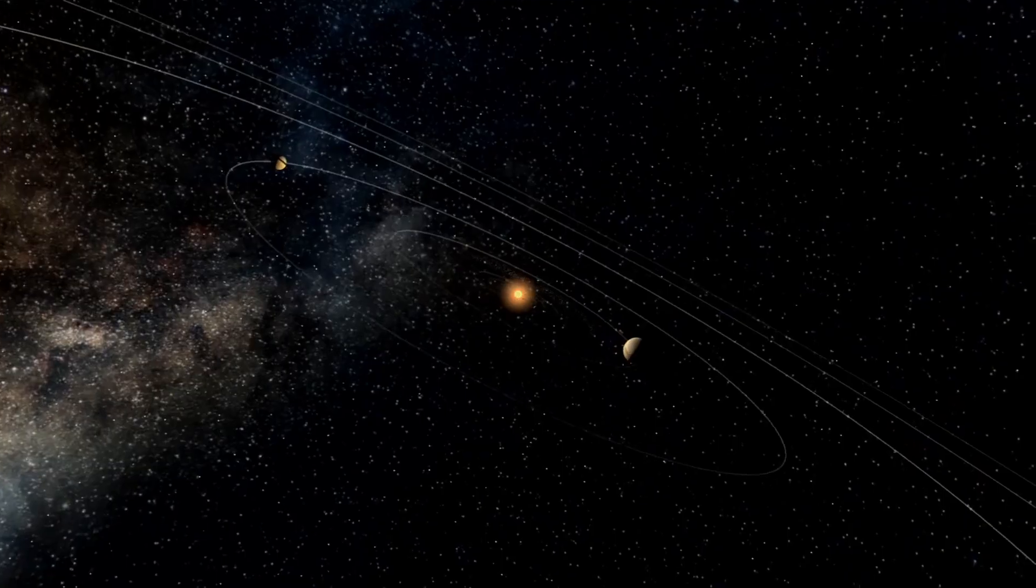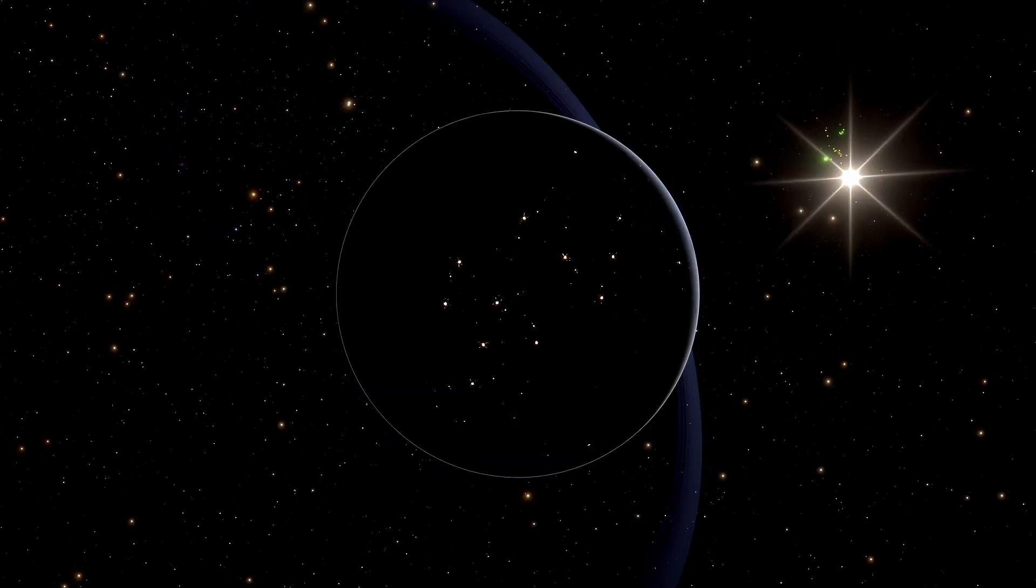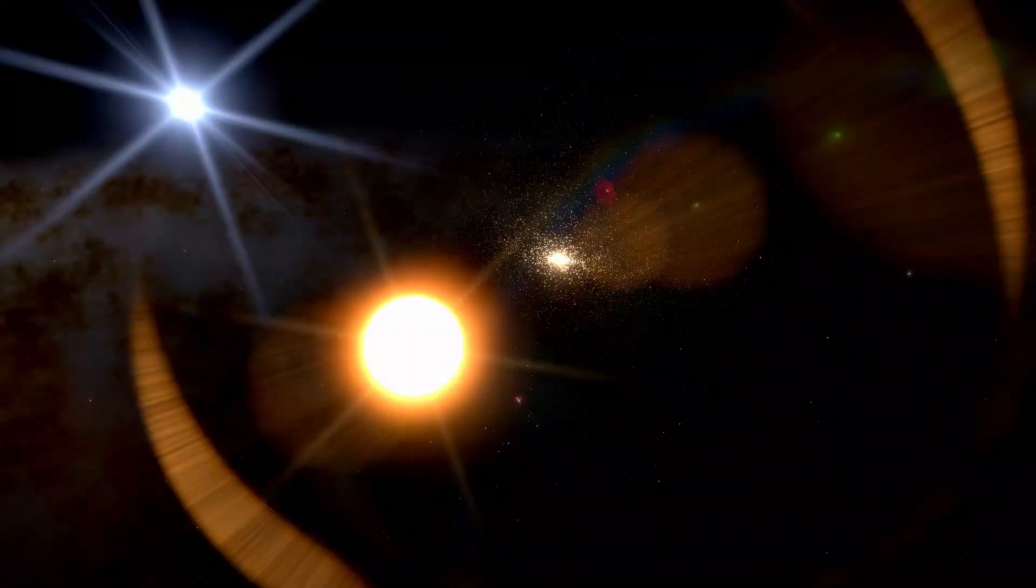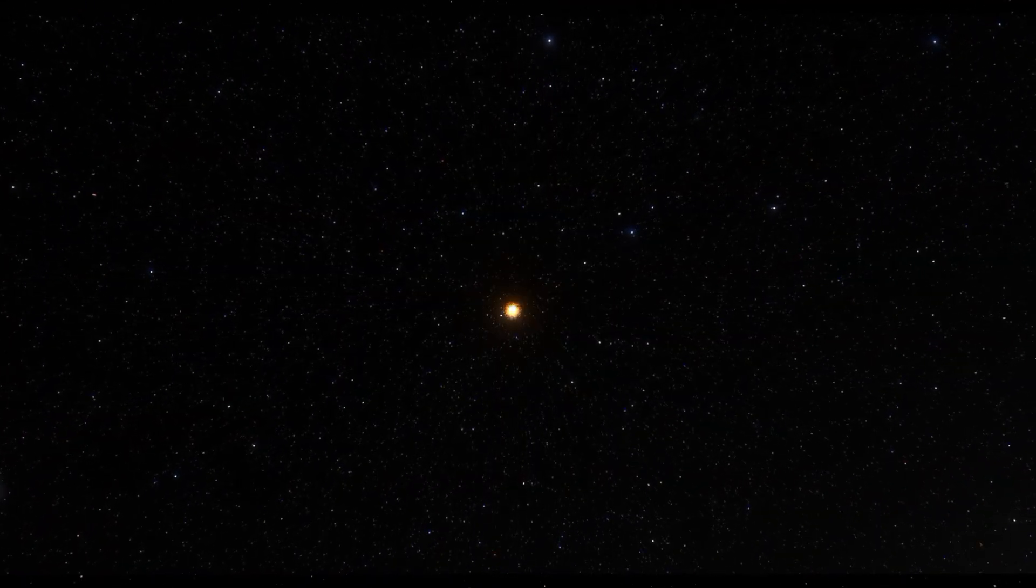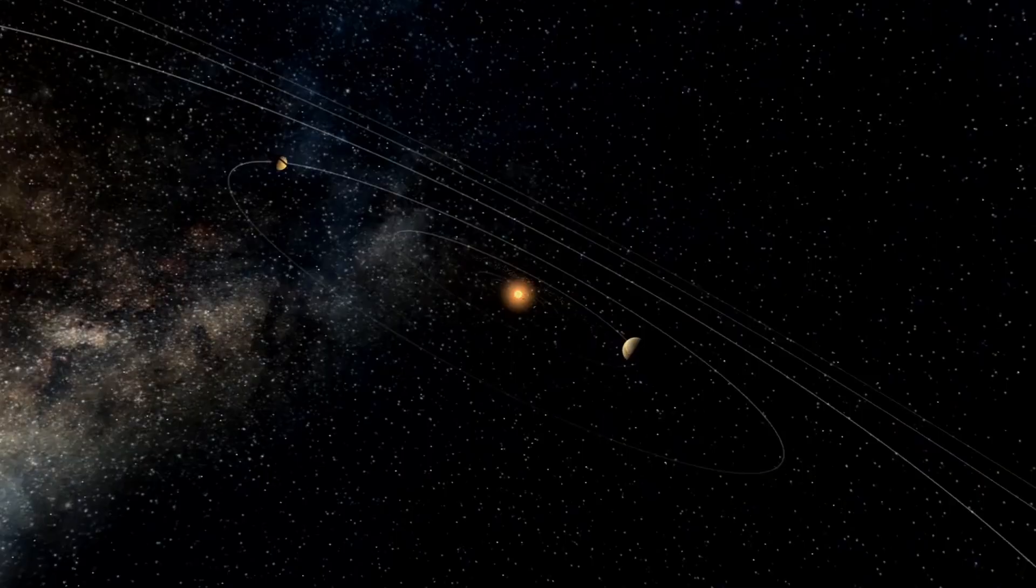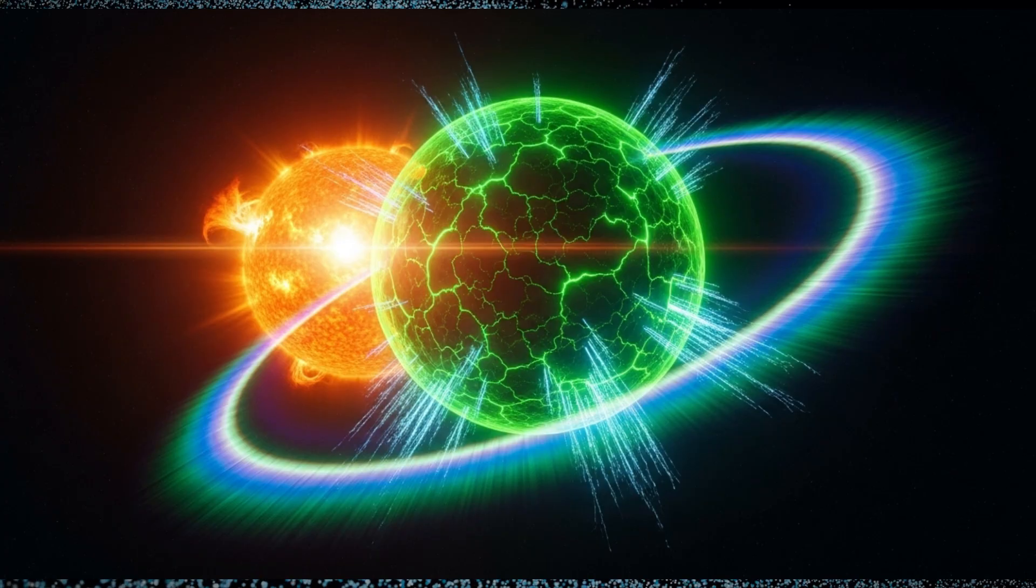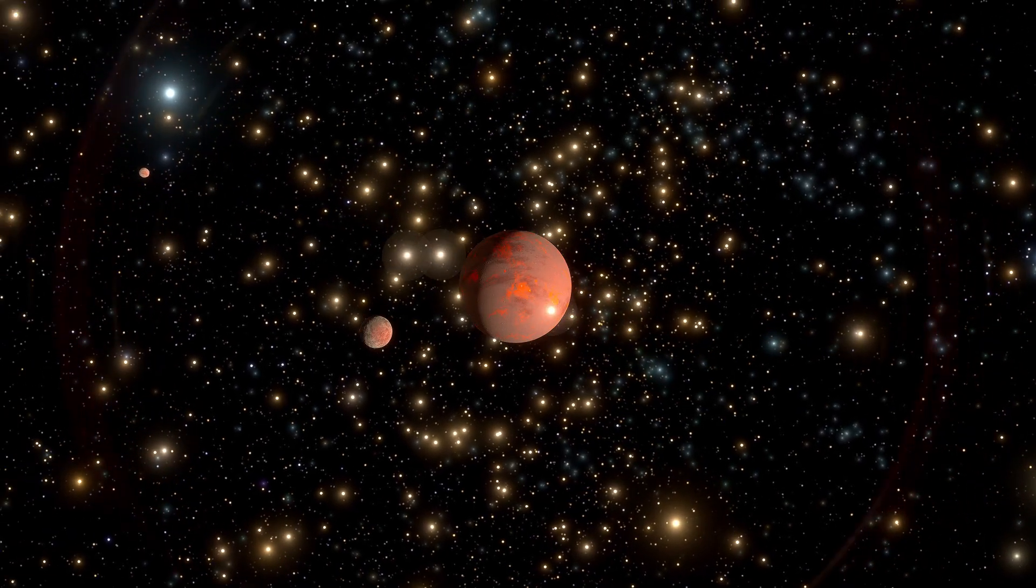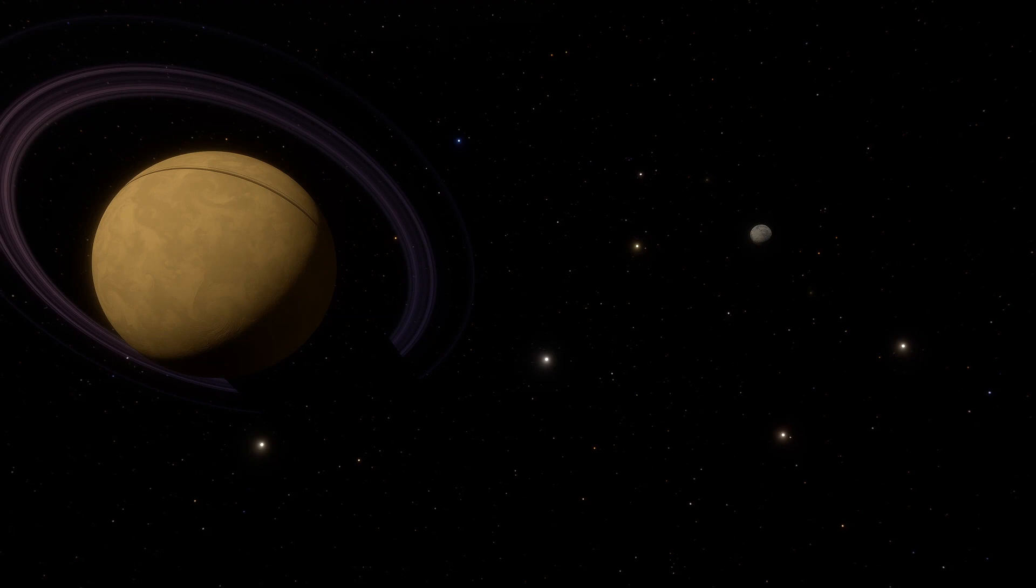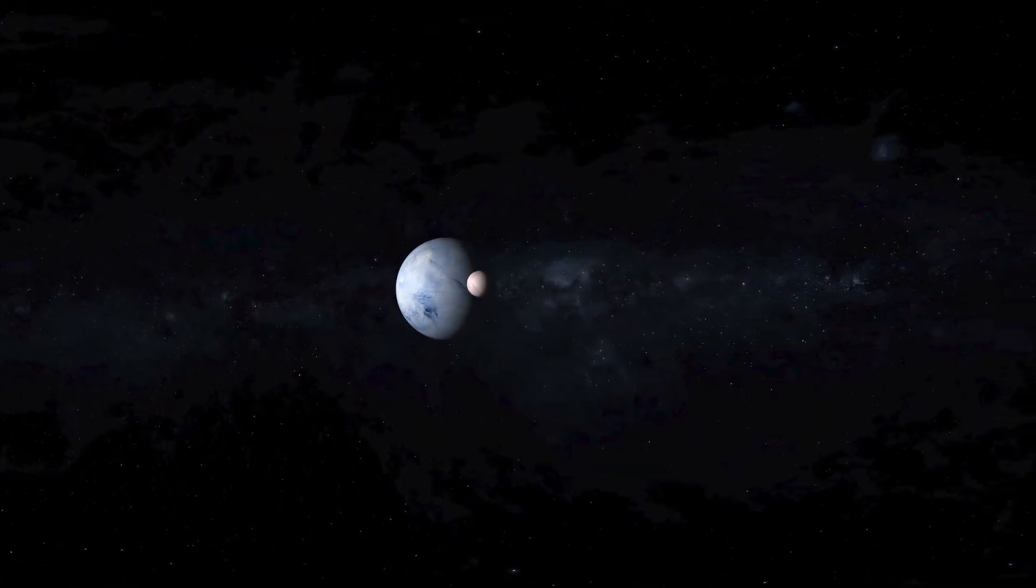A 0.2% change in velocity may sound small, but across cosmic distances, that's the difference between drifting and aiming. And when astronomers plotted its new trajectory, a silence fell over the room. The curve didn't lead it out of the solar system, it led it inward, toward the orbital path of Earth. Every line came back identical. The acceleration was real. The direction was deliberate.